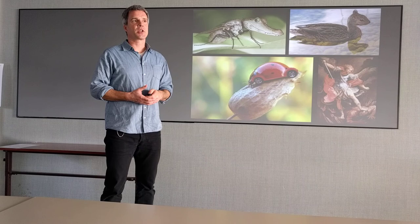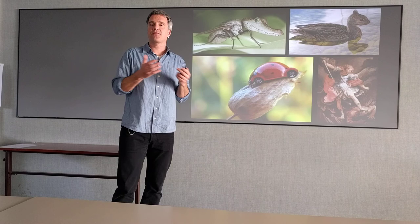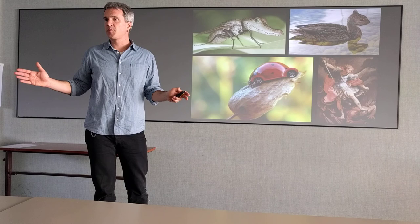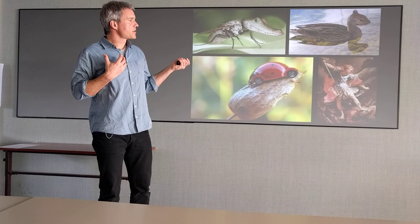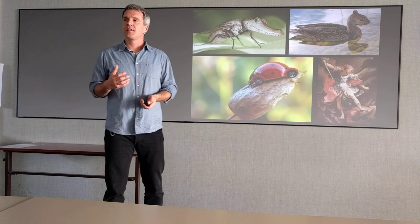Georges Cuvier believed that the only reason we don't see all kinds of shapes is because of function. Some shapes are functional and some are not, but I would say there's another reason, an internal reason. Some shapes are possible and some shapes are not, and we actually know very little about this map of the possible in evolution.